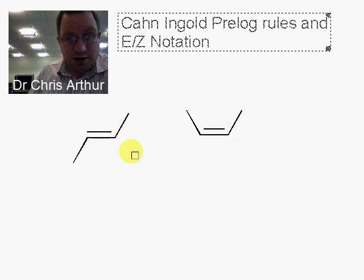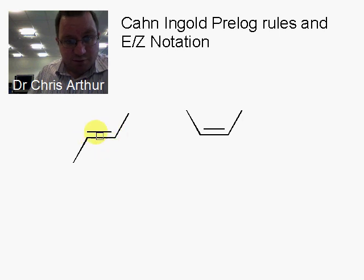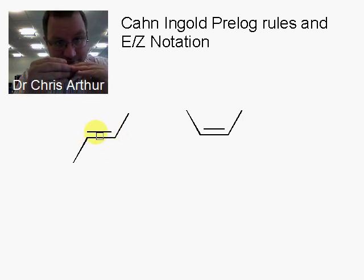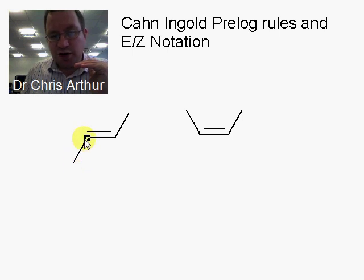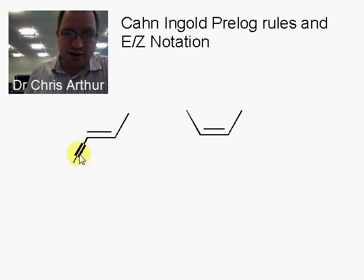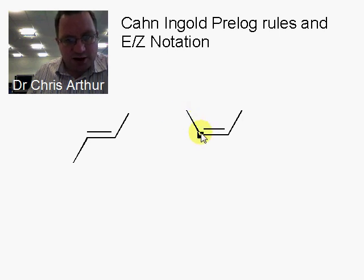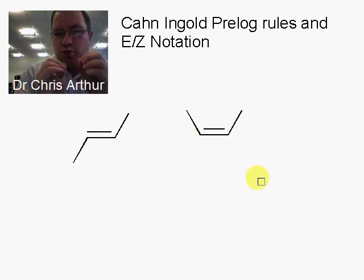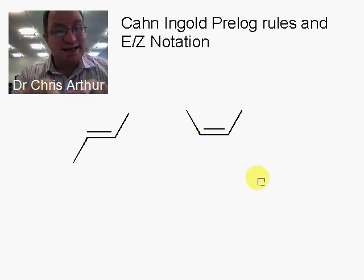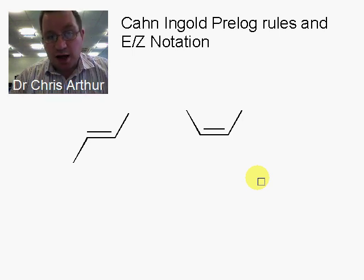You have seen that because double bonds cannot rotate, you can have a molecule where you have a methyl group coming down and a methyl group going up. This is different from the stereoisomer where both methyl groups come up. We need a tool that will allow us to tell the difference between these two, and we're going to use Cahn-Ingold-Prelog rules.